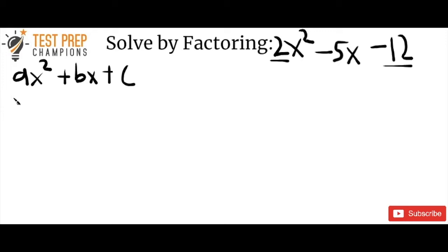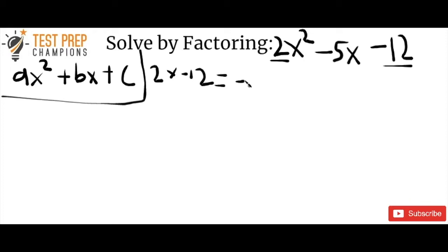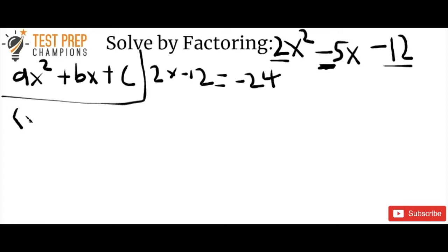We're going to start by doing 2 times negative 12, which gives us negative 24. Now that we've got negative 24, we want to pay attention to the b term, which is negative 5. We want to find two numbers that multiply together to give us negative 24, but also add together to give us negative 5. The best way is to list pairs of numbers that multiply to negative 24.